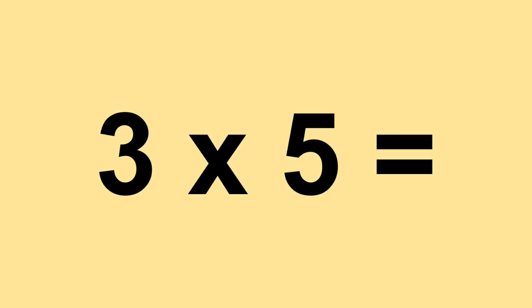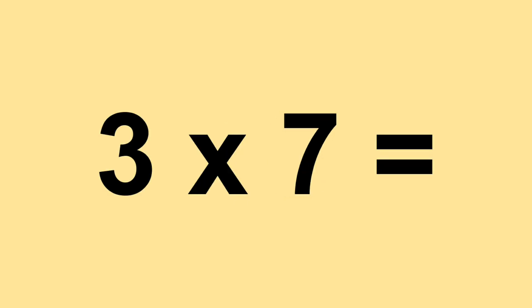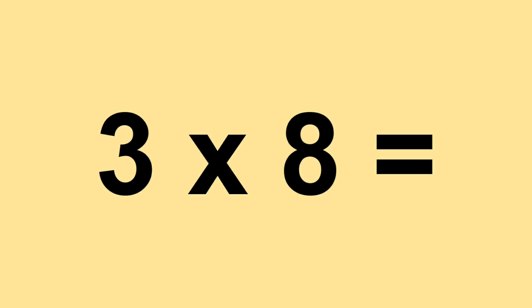Three times five equals fifteen. Three times six equals eighteen. Three times seven equals twenty-one. Three times eight equals twenty-four.